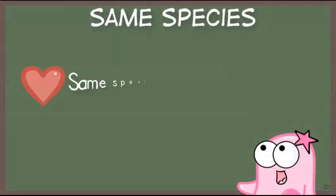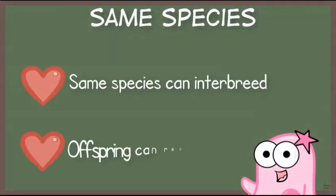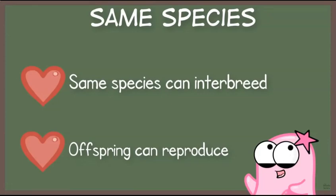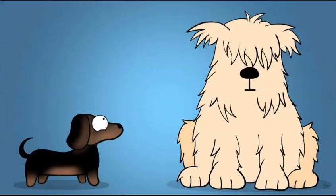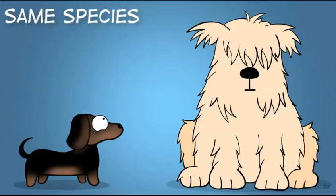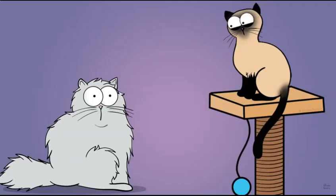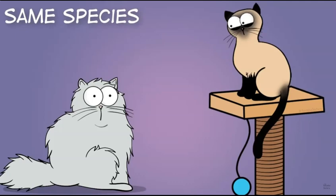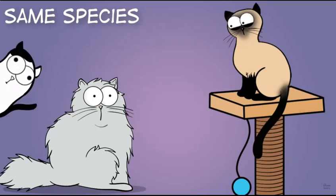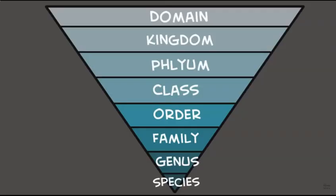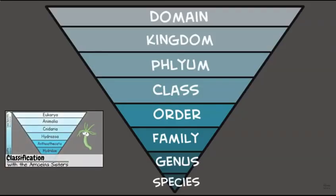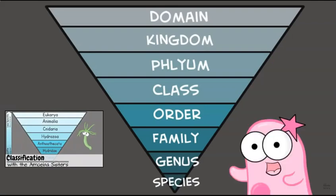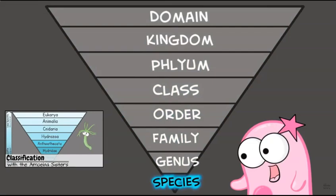Organisms that are in the same species can interbreed, and their offspring can reproduce. The huge variety of domesticated dog breeds are all the same species, even though they can look very different. Same with domesticated cats — all the different cat breeds are still the same species. In this video, we're going to focus on the level of species itself.